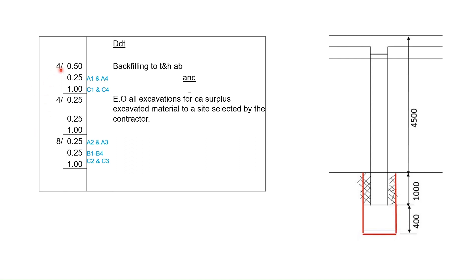For the L-shaped columns: 0.50 by 0.25 by 1 meter deep, multiplied by 4. The second set for L-shaped columns: 0.25 by 0.25 by 1 meter, multiplied by 4. For the square-shaped columns: 0.25 by 0.25 by 1 meter, multiplied by 8 as we have eight square-shaped columns. The description reads: deduct backfilling to trenches and holes as before, and extra overall excavations for carting away surplus excavated material to a site selected by the contractor. And just like that we have reached the last step of our exercise.